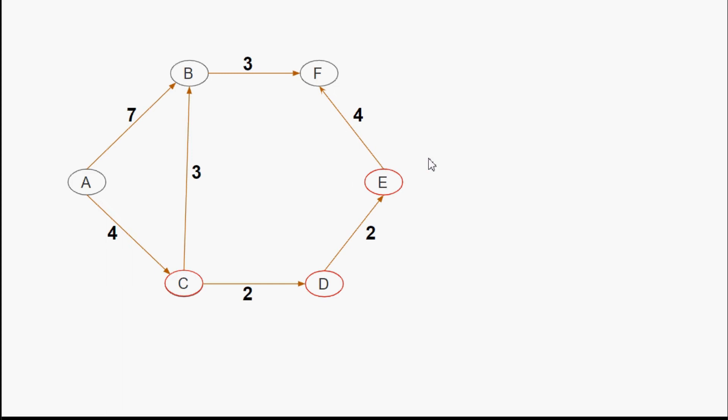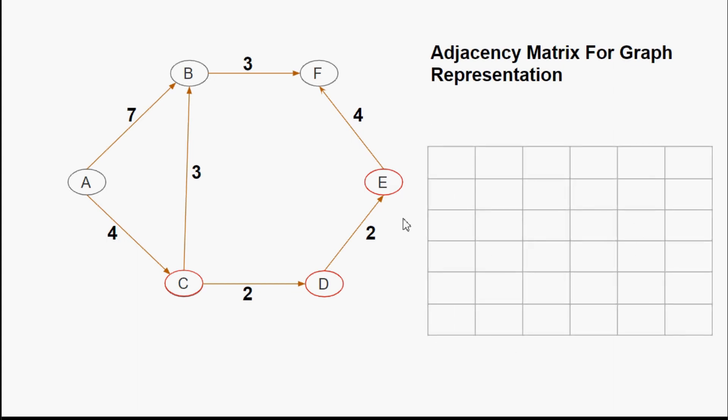To represent a graph in the form of a matrix, we use an adjacency matrix. An adjacency matrix always has equal numbers of rows and columns — it is always a square matrix. The number of rows and columns depends on the number of vertices. If I have six vertices, I will have six rows and six columns. The matrix will have rows and columns labeled A, B, C, D, E, F.